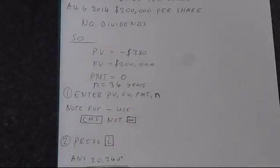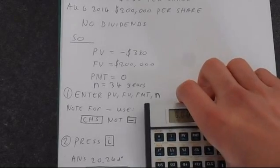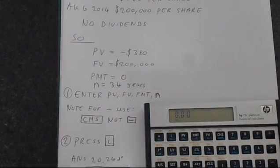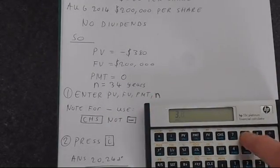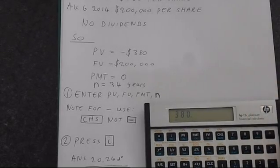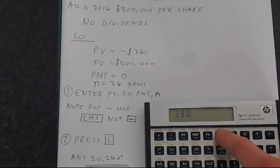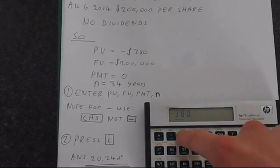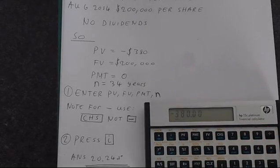This is simple to do. Take our values in our table and insert them. Start with $380. Don't use the minus key. Instead, use this CHS. That changes the sign, makes it minus. Store that in present value.